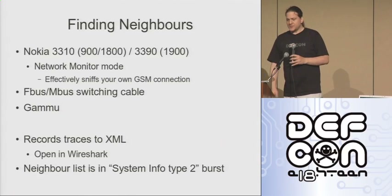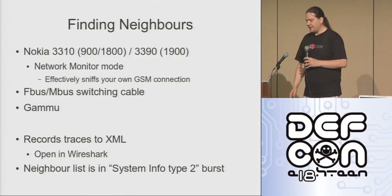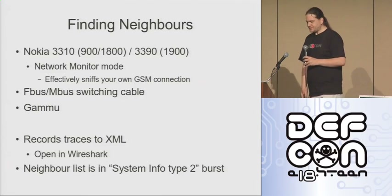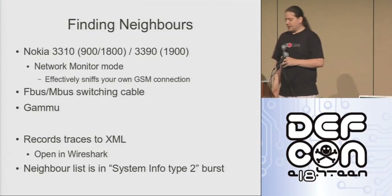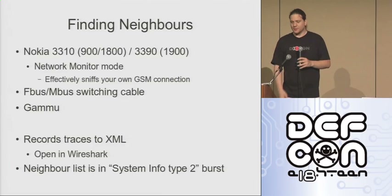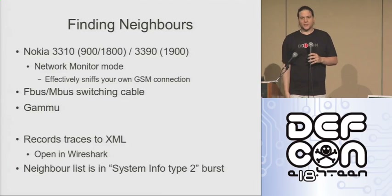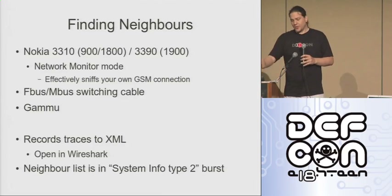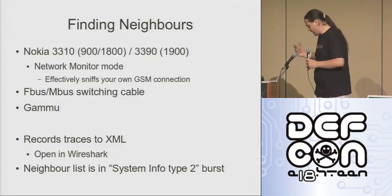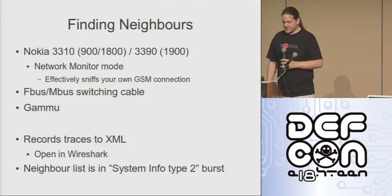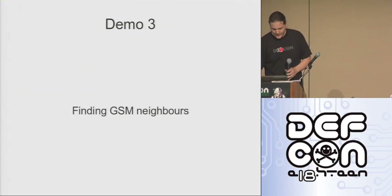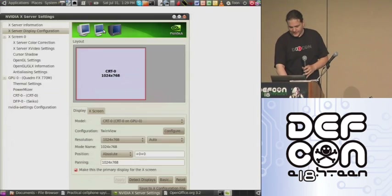So you get one of these phones, you get a special F-bus/M-bus switching cable, and a program called GAMU. GAMU is open source. It connects to the phone over this cable and just dumps out a trace in XML, which you can open up in Wireshark. I was going to demo it, but my 3390 has gone wandering, so what I'm going to do instead is just show you what the traffic looks like.